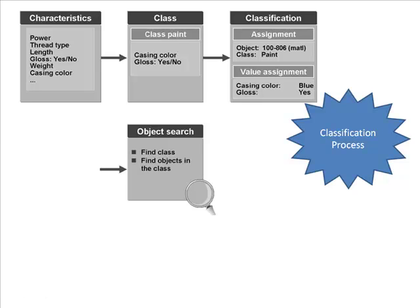First, you create all kinds of characteristics that you're interested in. So here we have a master list of characteristics: power, thread type, length, gloss, weight, etc. And of course, for each characteristic you will specify what type it is - what kind of value does it accept: alphabetic values, numeric values, alphanumeric values, boolean values, etc.